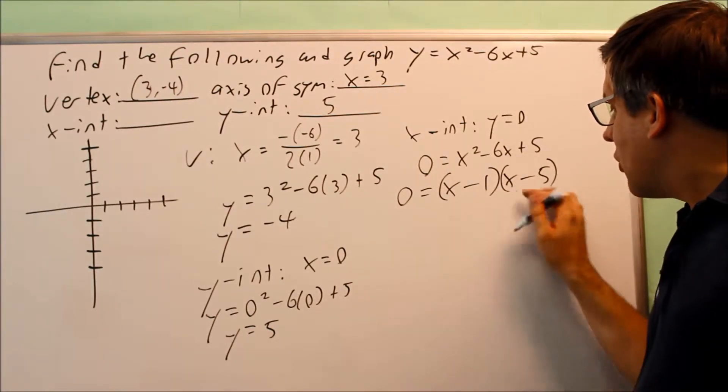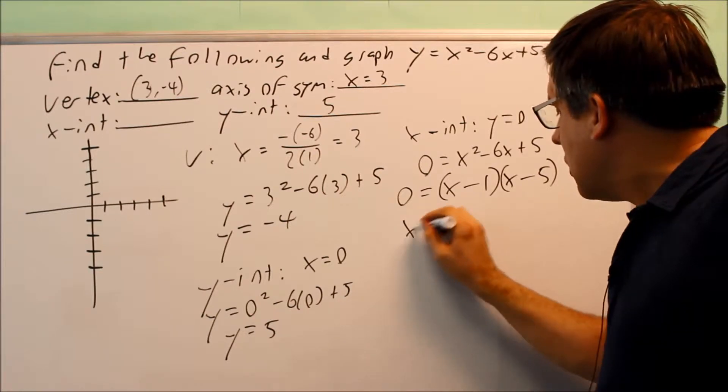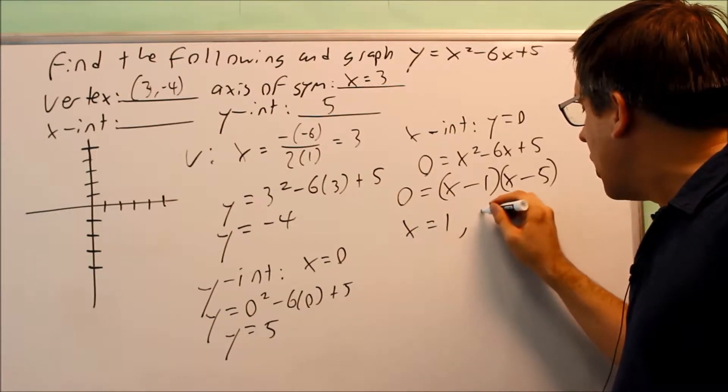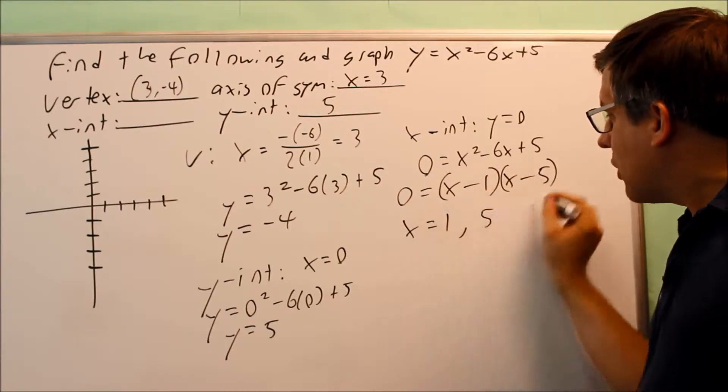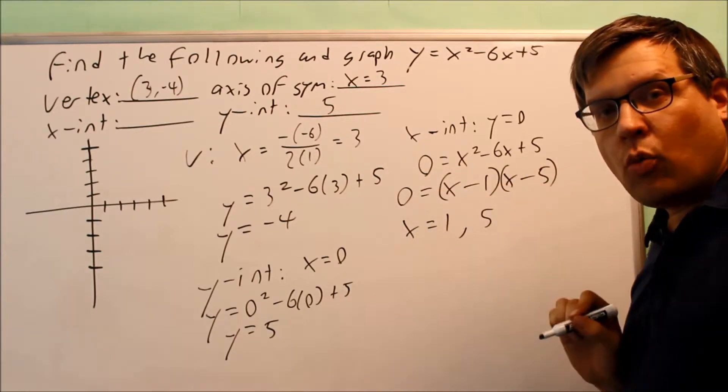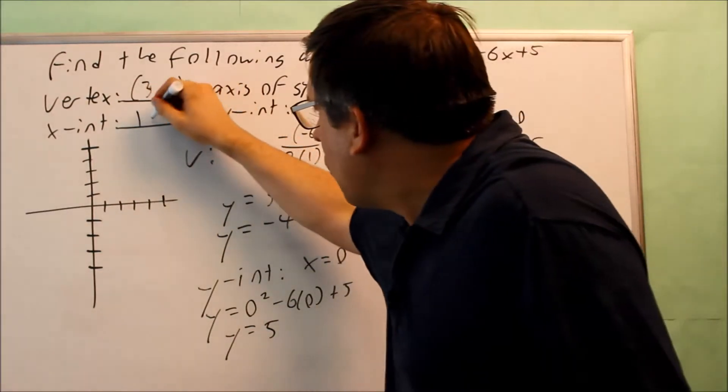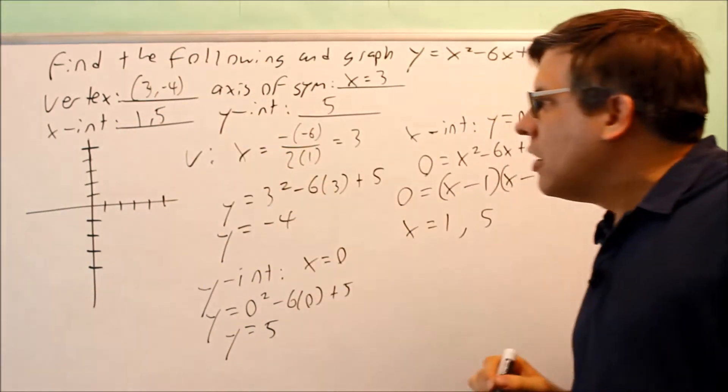Each of these, individually, you're going to set equal to 0. If you do, you're going to get x is 1, and you're also going to get 5 by setting both those equal. That's what will make this equation true, would be 1 and 5. So now I know that 1 and 5 are my x-intercepts.